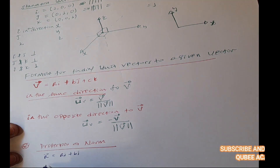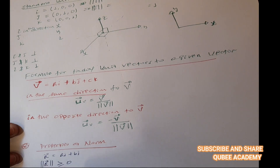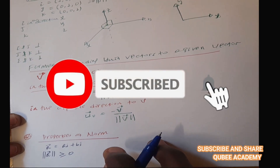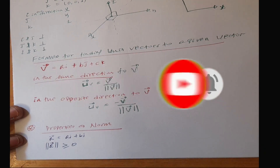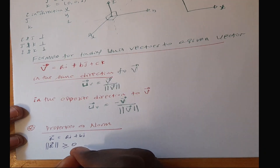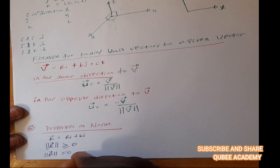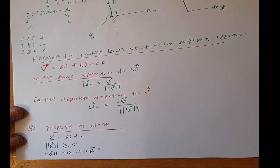Now, some properties of the norm: the magnitude of a vector is always greater than or equal to 0. The magnitude of vector a equals 0 if and only if vector a is equal to the zero vector.